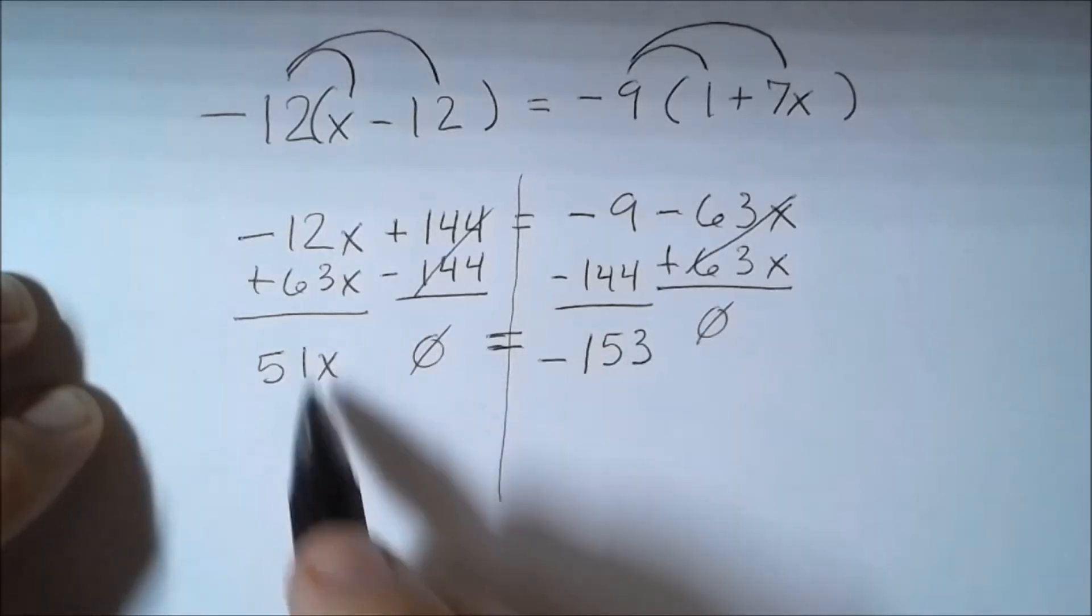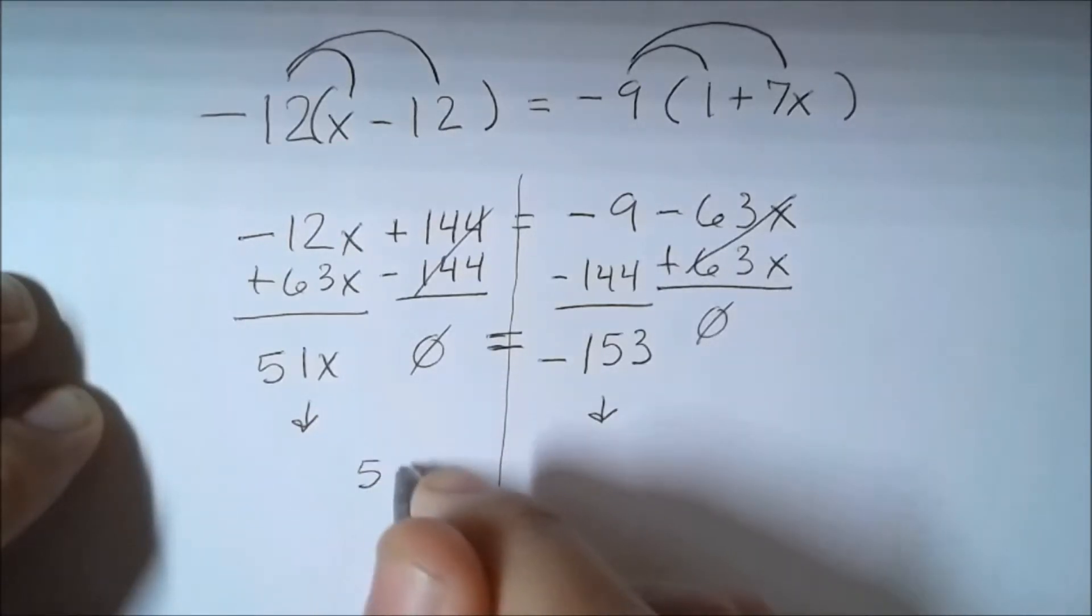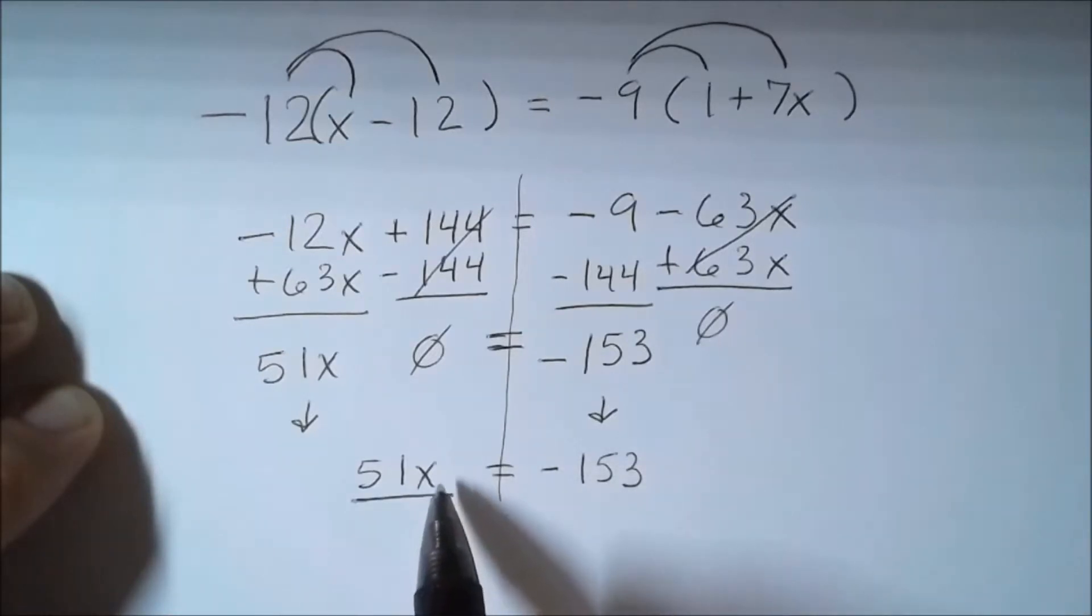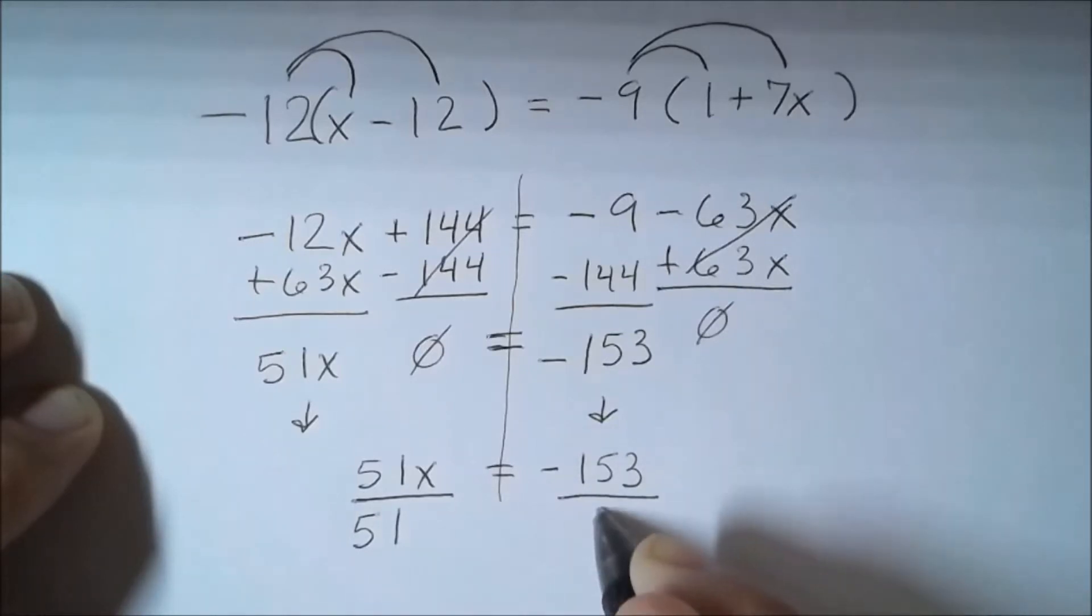So if we ignore our zeros and just bring down our values that are meaningful, we have 51x is equal to negative 153. So now we just need to divide this. I want to get x by itself, and the way to get x by itself is I have to undo this operation. So this is 51x. If I want to undo 51 times x - because remember, our coefficient multiplies to our variable, that's its purpose - we're going to do the opposite of multiplication, which is division. So we're going to divide out 51 from both sides.